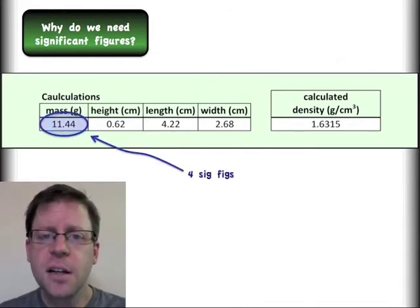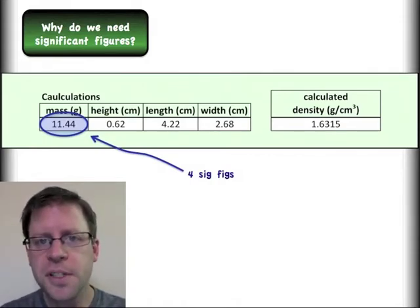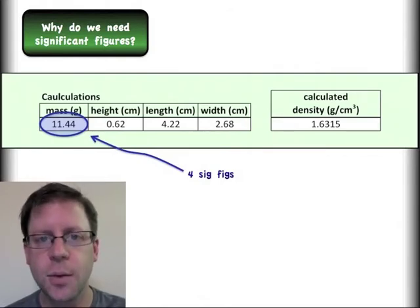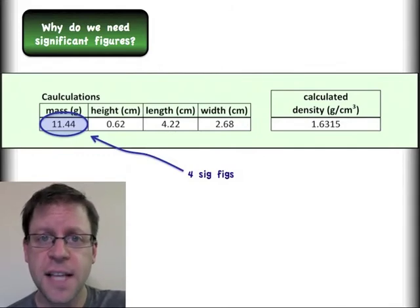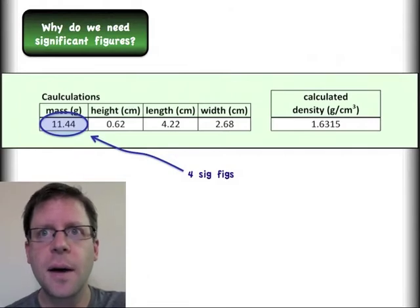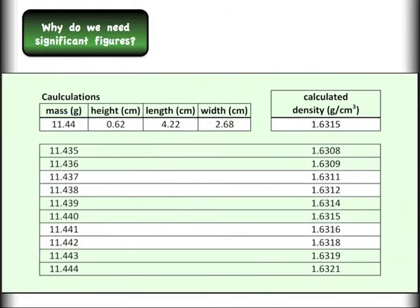So what we're going to do is we're going to take a look at some of these individual numbers and we're going to see how varying those numbers would change our overall end density that we calculated. I'm going to start with the mass number that had four significant figures. That was actually more than any other measurements. We know that one with the most number of digits. What I'm going to do is I'm going to allow that number to vary assuming that it is 11.44. But I'm going to say what would happen if I knew one more digit over and I could see how those things would have come together and rounded to my 11.44.